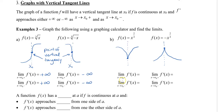As we approach x₀ from the right side — which is this side here — we can see that the slope, our first derivative, is going to positive infinity. From the left side, this slope is getting more and more negative, so this is approaching negative infinity.